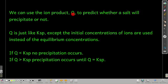What we can use Q for is to predict whether or not a salt will precipitate out when we mix two solutions together that potentially form an insoluble salt. Q is just like Ksp, except that instead of the equilibrium concentrations, we have the initial concentrations of the ions. When you calculate Q, if the value you get is less than the Ksp for that salt, then when you mix those solutions together, no precipitation occurs.